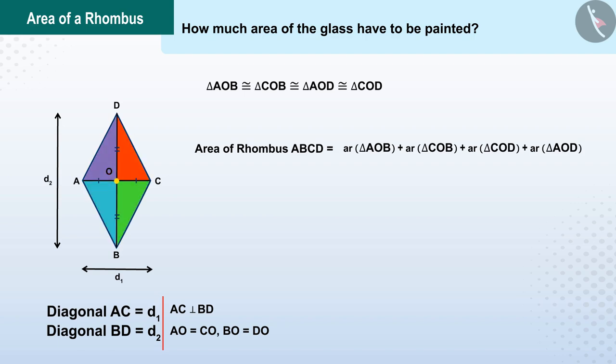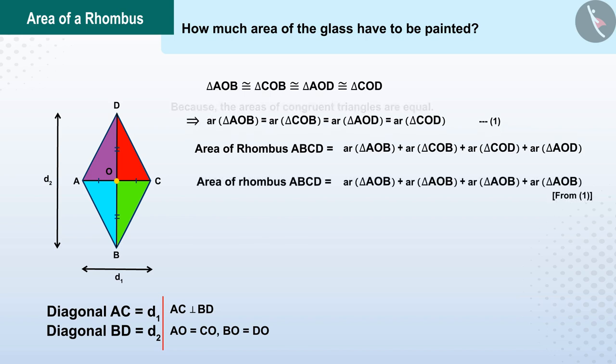Since these four triangles are congruent, the area of the triangles AOB, COB, COD and AOD will be equal. The area of the rhombus ABCD is the product of 4 and the area of triangle AOB.